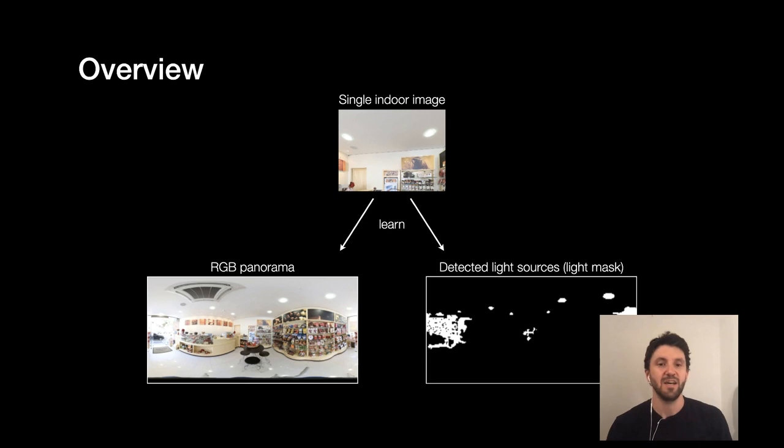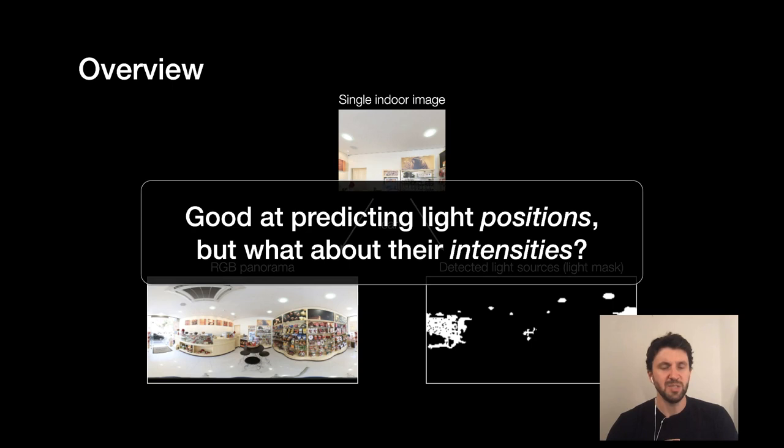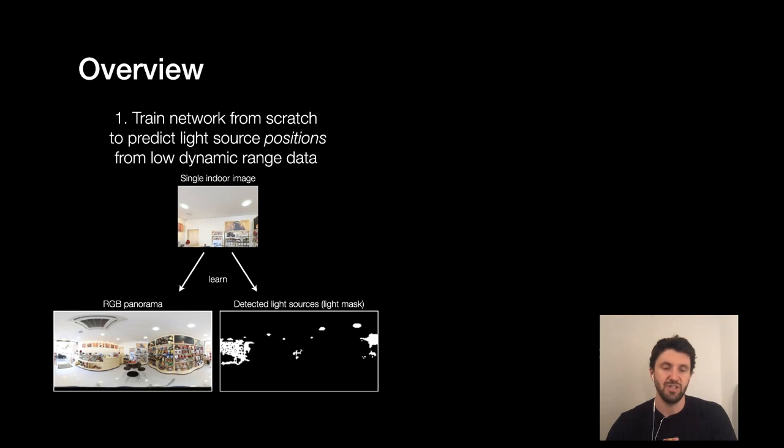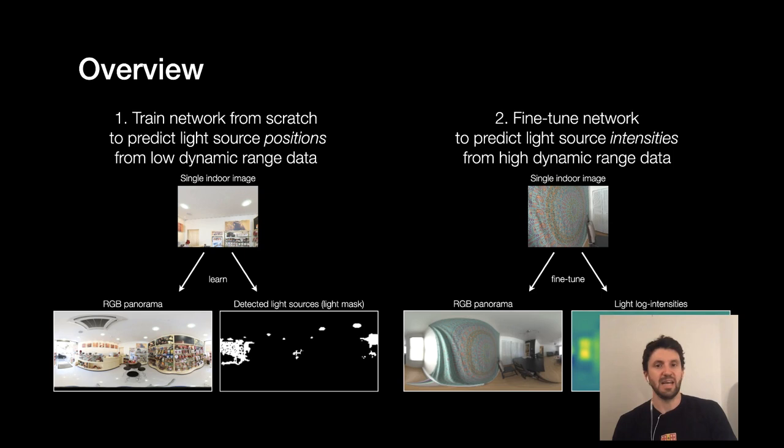All right, so this is for this first part, we are able to predict light sources from a single indoor image. We didn't really talk about the RGB panorama, but it's able to get a rough, pretty diffuse and pretty smooth estimate of the average color of the scene. But this is pretty good at predicting the light positions. But we haven't talked about their intensities so far, because we've been dealing with LDR, that is low dynamic range panos exclusively, right? So how are we going to estimate how bright the light sources are? That's actually a pretty important aspect that we've glossed over so far. So unfortunately, LDR is not going to cut it. So we're going to fine tune our network on high dynamic range data in a second step.